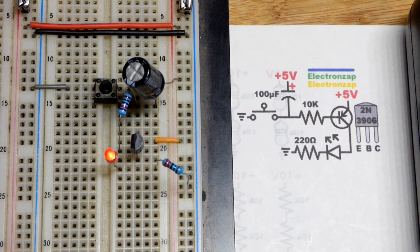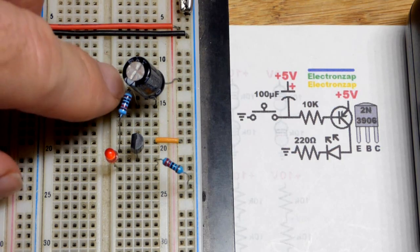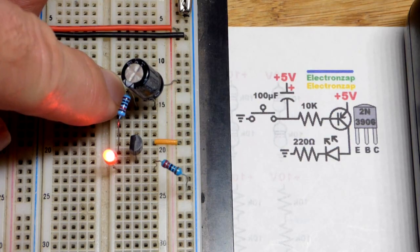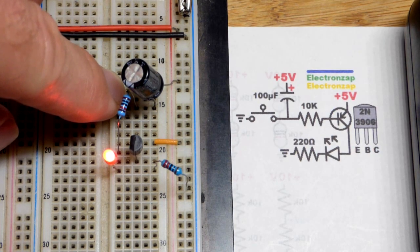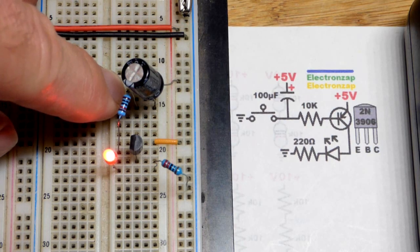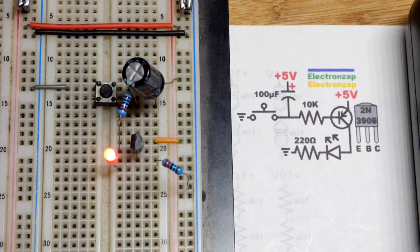We just need that to charge the capacitor. While the switch is closed, it's going to make sure the LED stays lit and the capacitor stays fully charged. Then I release it.